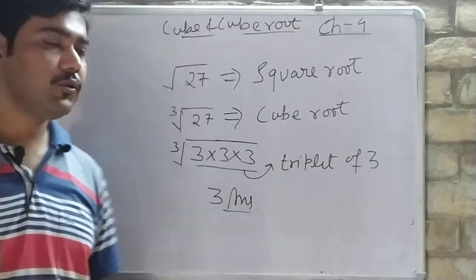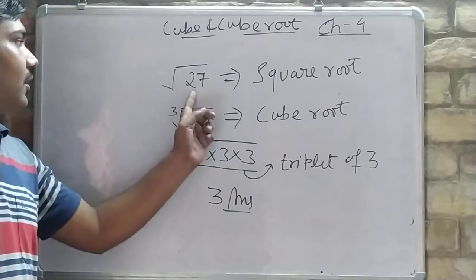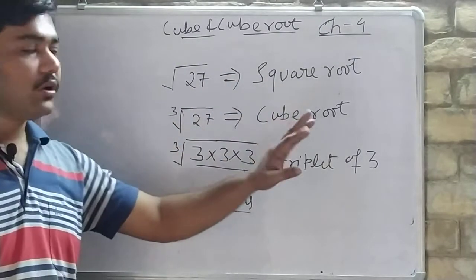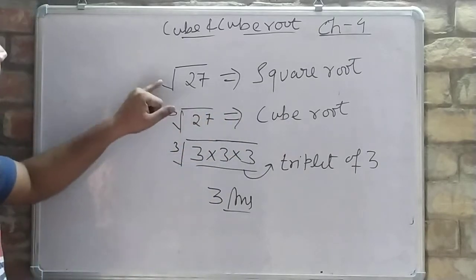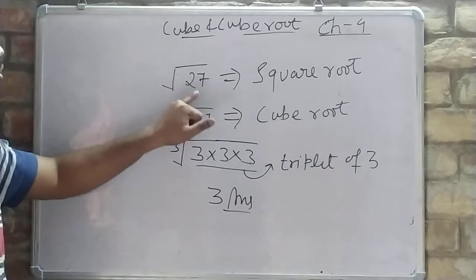Let me explain again. In square root we form a group of 2, and in cube root we form a group of 3. So the method for solving cube root is to identify triplets through prime factorization.